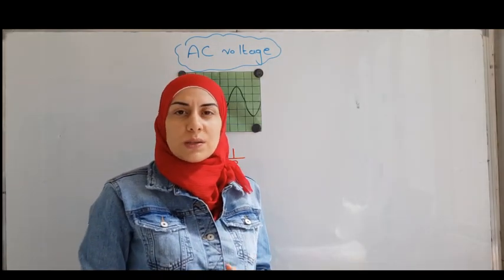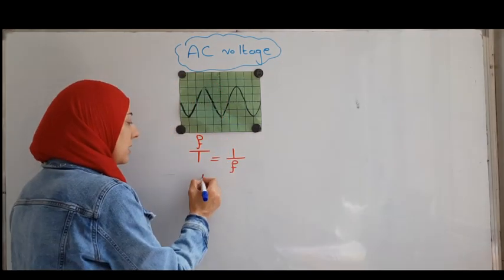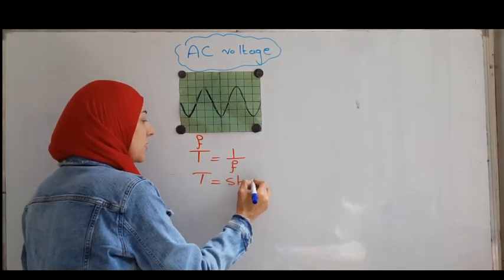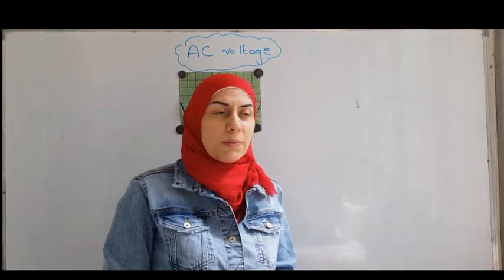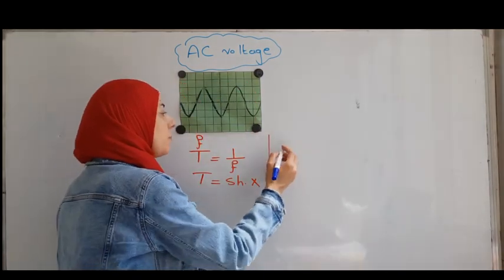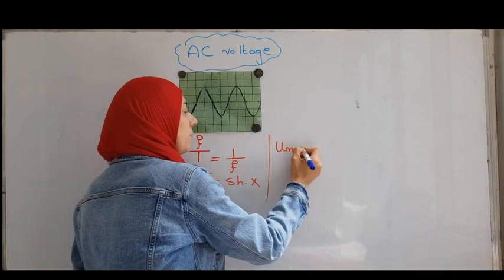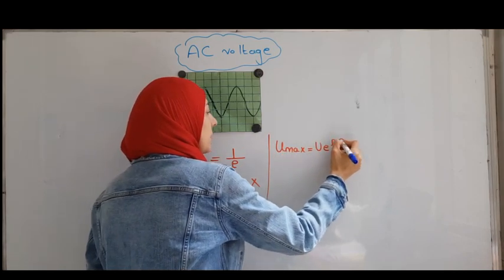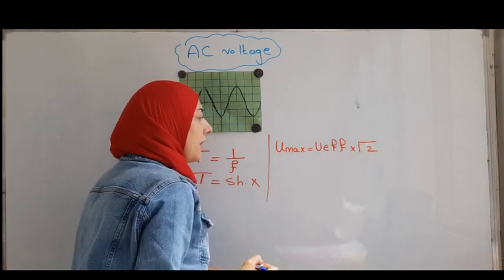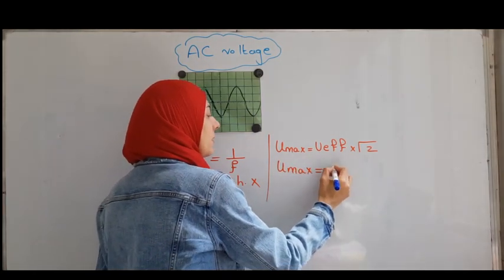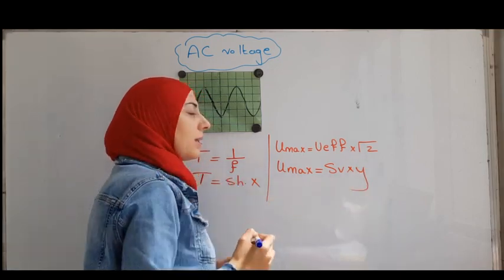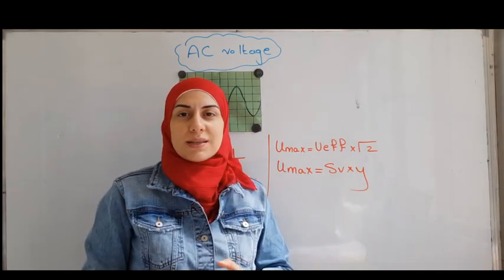After you get the period, you might be asked about X or about SH. T equals SH times X. Also, you might be given U effective from the beginning. So how do you get U maximum? U maximum equals U effective times radical 2. And after you get U maximum, you can use this formula, and you can get SV or Y as required.